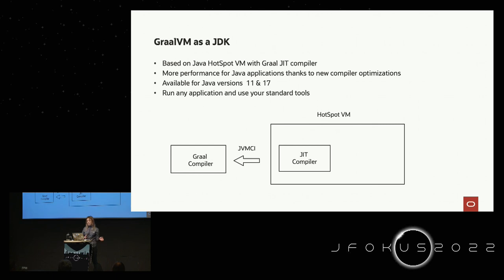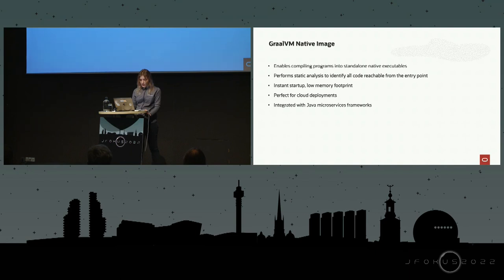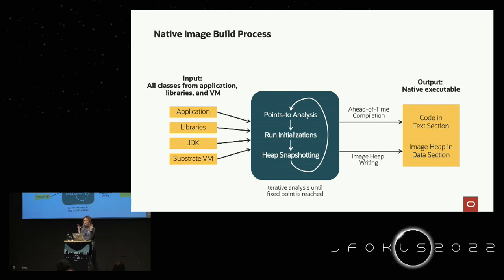You can run basically any application using standard tools — migration is super easy when using GraalVM as a JDK and running in JIT mode. For native image, that is the focus of today's talk. The ahead-of-time compilation technology takes your application and produces a native executable. Under the hood it performs static analysis, trying to find all reachable code and understand everything the application is doing.